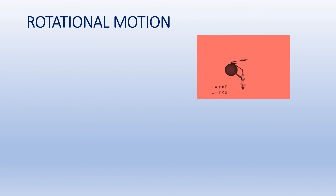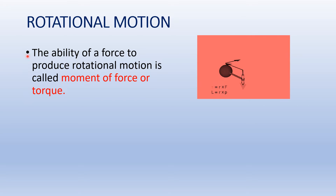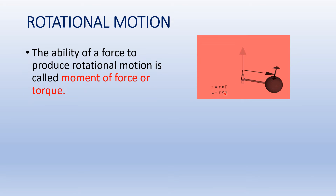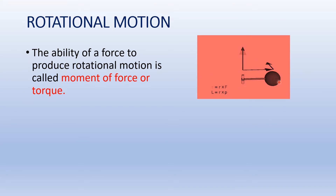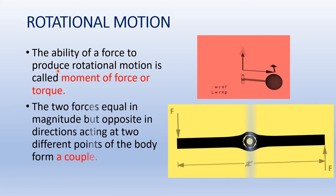Rotational motion. To learn about rotational motion, we should know what torque is. The ability of a force to produce a rotational motion is called moment of force or torque. The torque is given by R cross F, where R is the perpendicular distance measured from the axis of rotation and F is the force applied to the body. As the direction of the force changes, the direction of the rotation also changes.